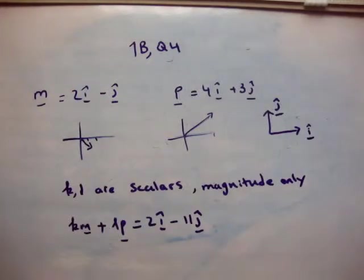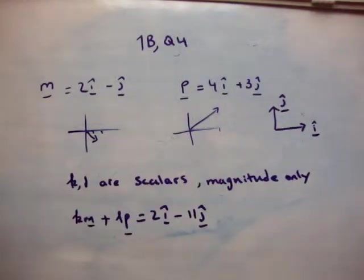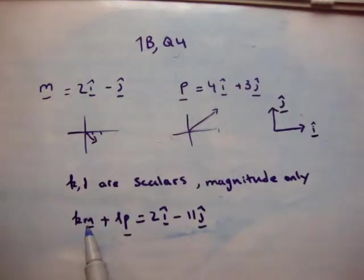And finally, we're given an equation saying that k times m plus l times p is equal to 2i-hat minus 11j-hat. So k times m, that's a scalar times m, which is a number times m. It just multiplies or changes its magnitude by a certain amount. And similarly with p.